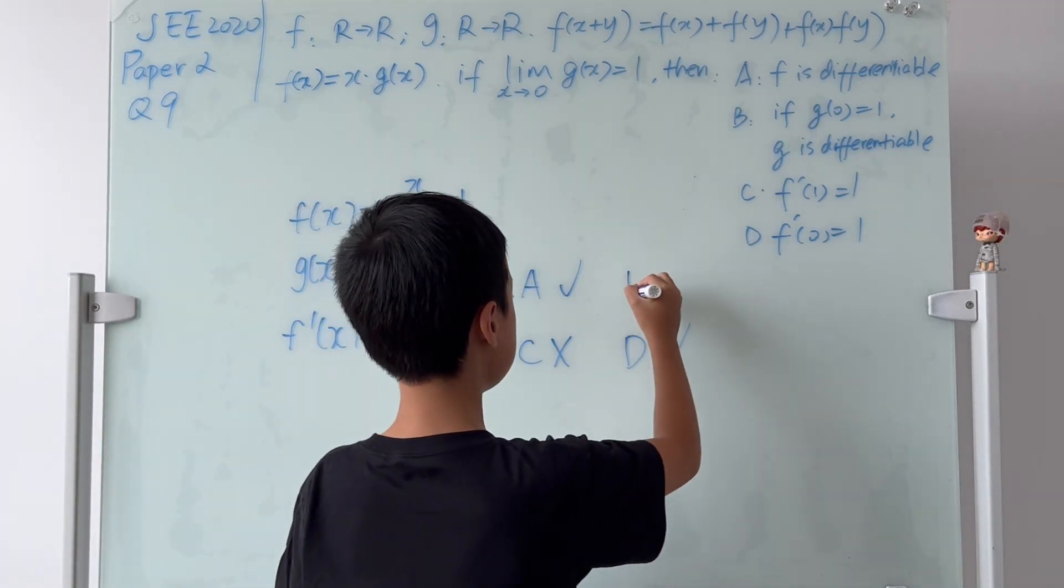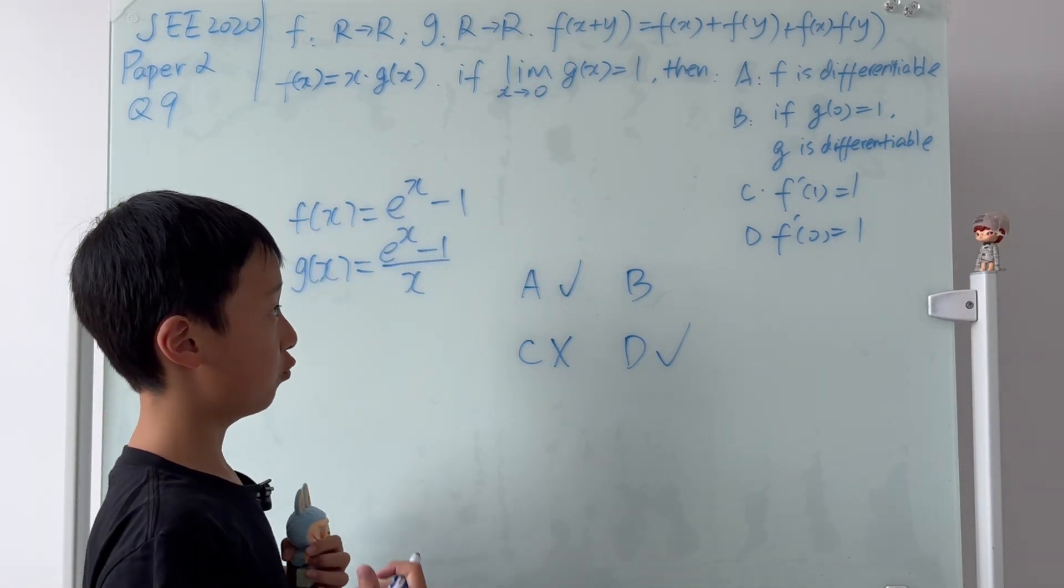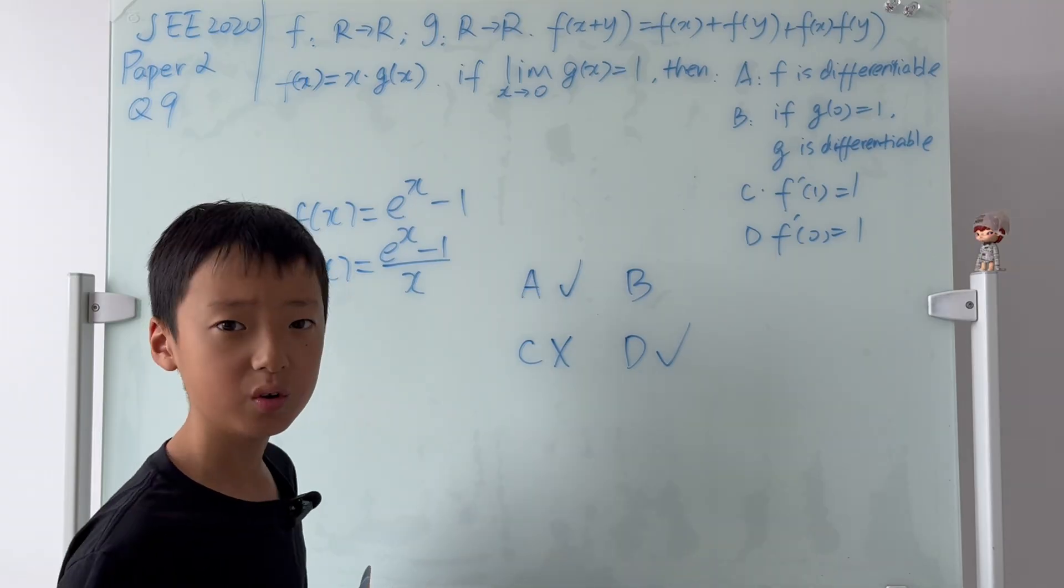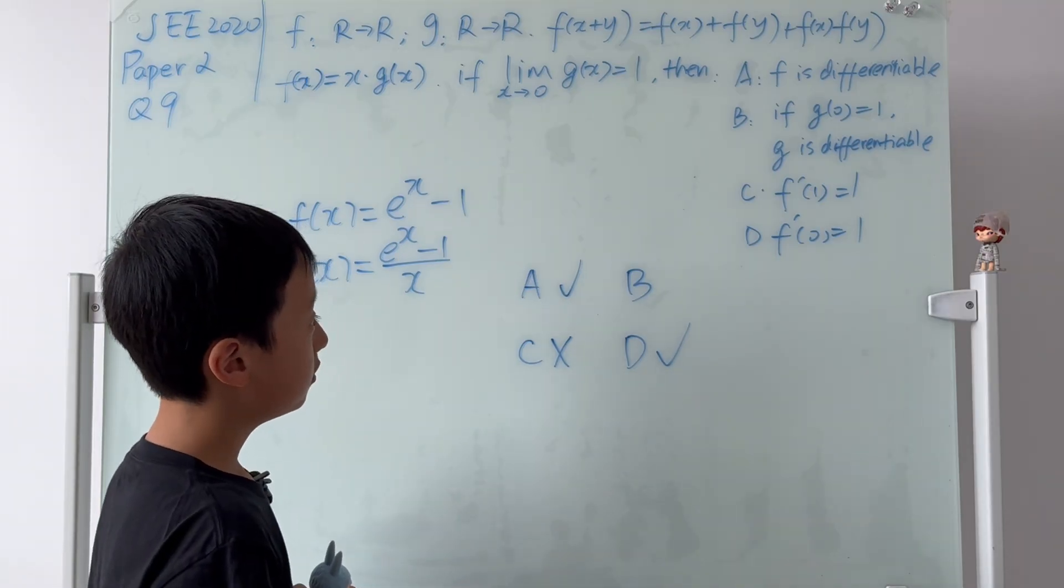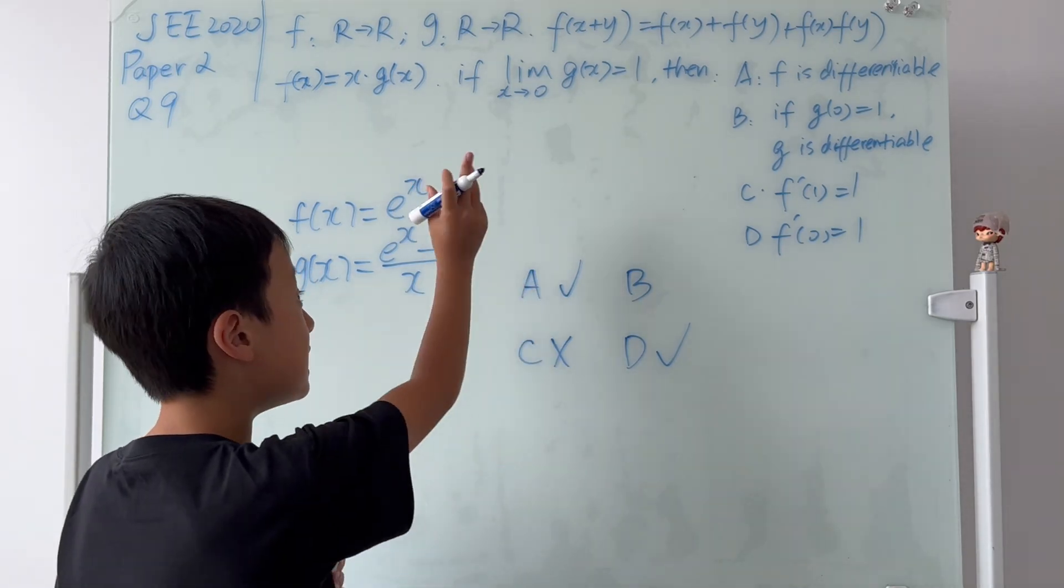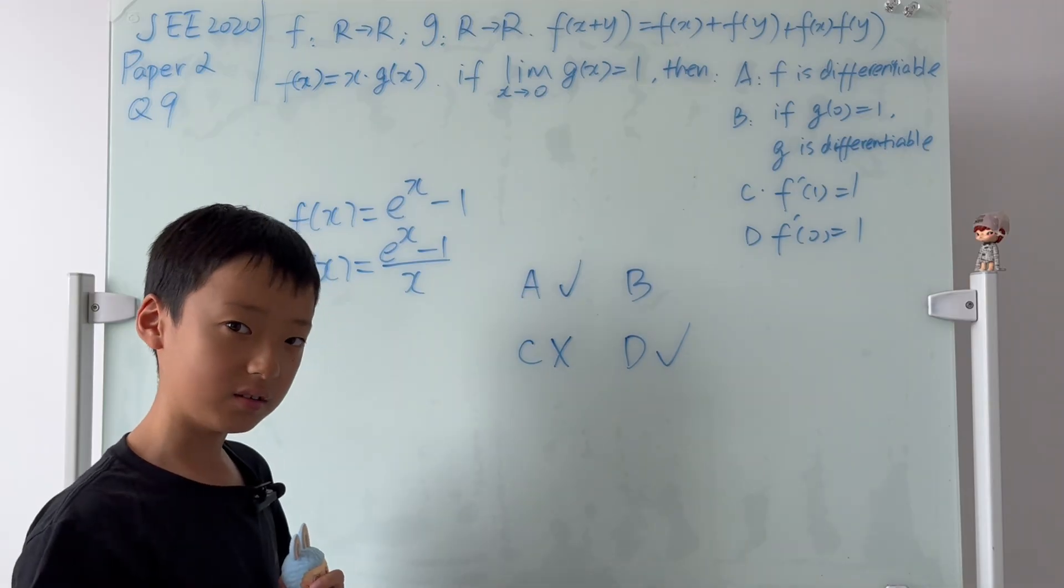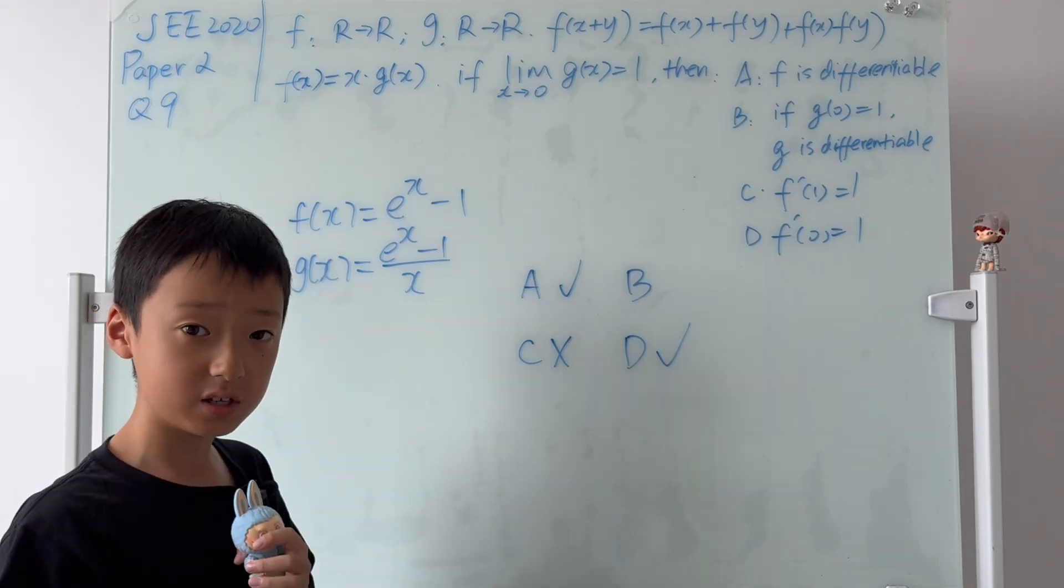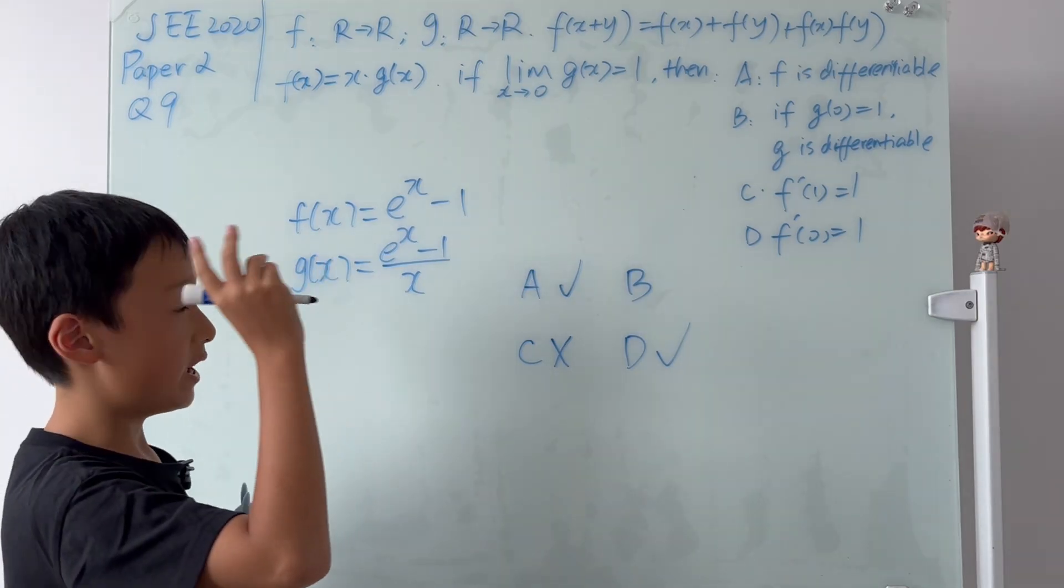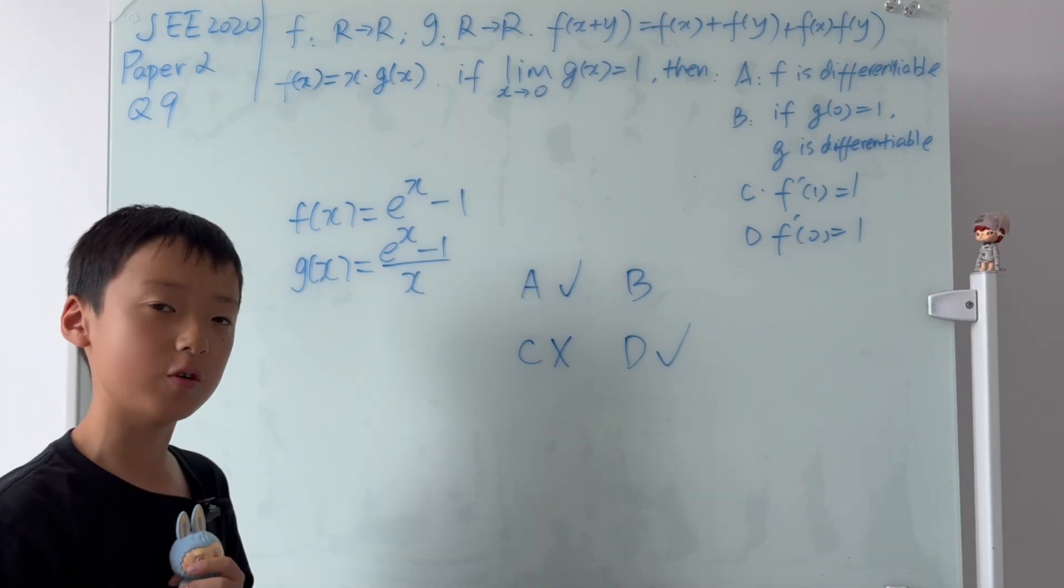Now, time for the hardest one. b. b says, if g(0) is equal to 1, then g is differentiable. The first step to prove that something is differentiable is, you gotta prove that it's continuous. Well, didn't it already tell us in the given information? No. Because that's the limit. But to look in b, it says if g(0) is exactly equal to 1. So that means this curve is smooth and it's continuous. And our next step is, we have to prove that when x is not equal to 0, that the derivative exists. And when x is equal to 0, the derivative exists.